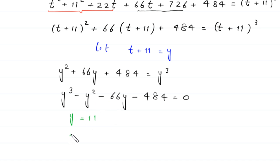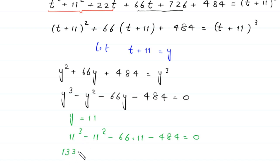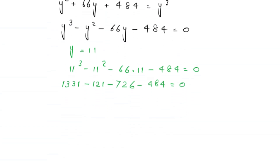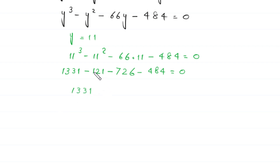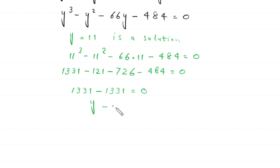If we check y equals 11 in this equation, it becomes 11 cubed minus 11 squared minus 66 times 11 minus 484. That is 1331 minus 121 minus 726 minus 484, and these three terms sum to negative 1331, so the result equals 0. This means y equals 11 is a solution, so y minus 11 is a factor of this cubic equation.